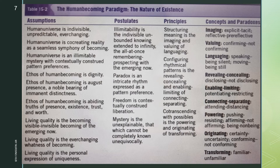Revealing-concealing is the first concept of the second principle; its paradox is disclosing-not disclosing. It is the way persons disclose and keep hidden who they are becoming, with the becoming visible-invisible becoming of the emerging now. There is always more to tell and more to know about self and others. Sometimes people know what they want to say and deliver messages with great clarity; at other times people may surprise themselves. Some aspects of reality remain concealed. People also disclose differently in different situations and with different people. Patterns of revealing-concealing are co-created and intimately connected with the intentions of those co-creating the moment.